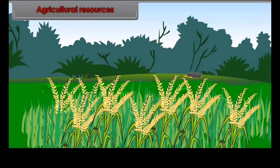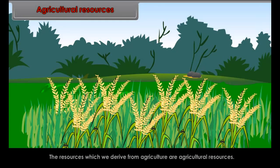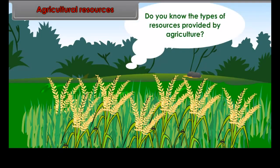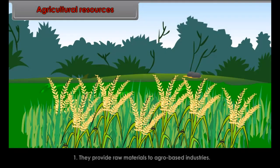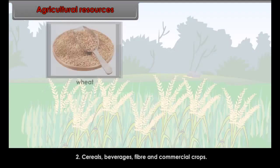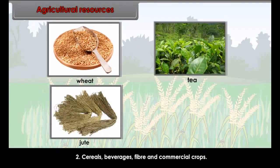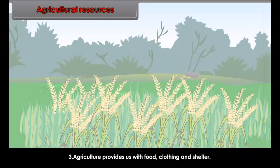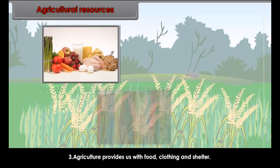Developed resources are those resources which are actually in use. For example, on river Subtlage, power projects have been set up and electricity is being generated. This has become a developed resource.